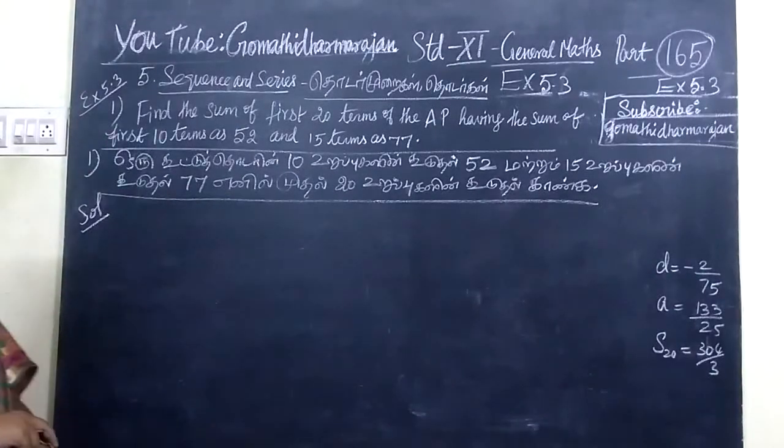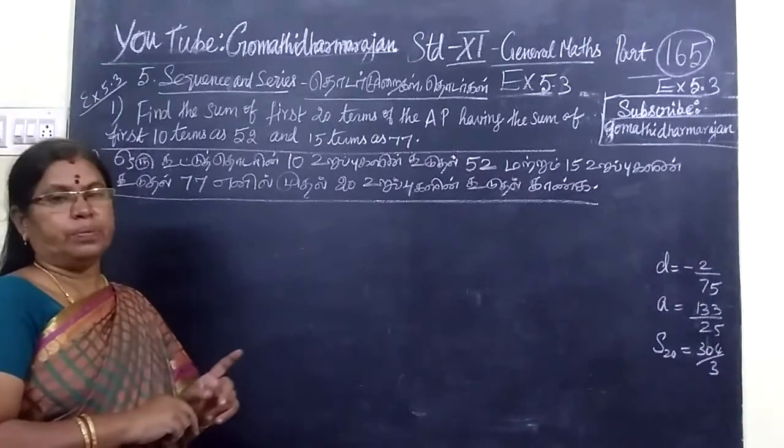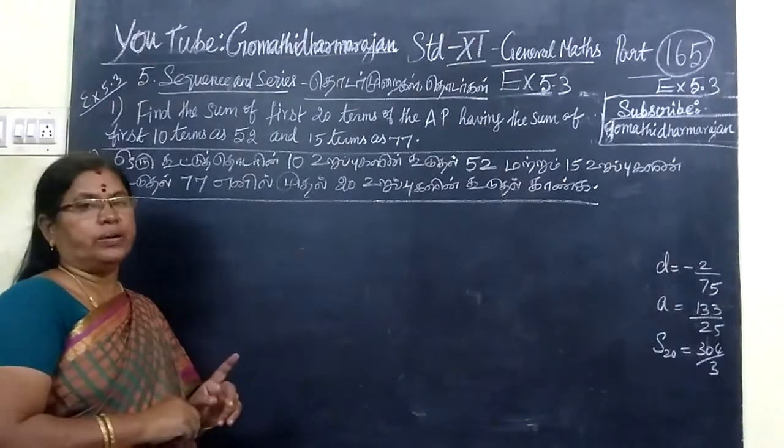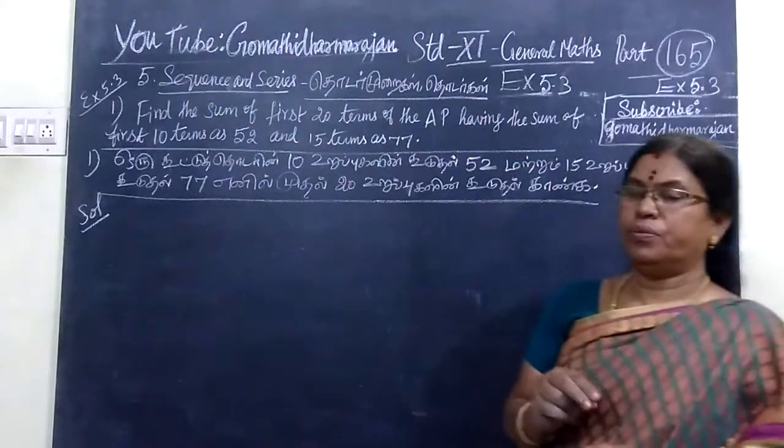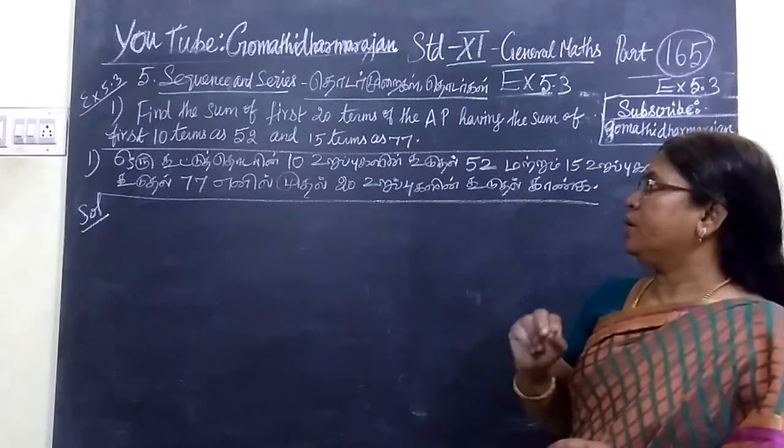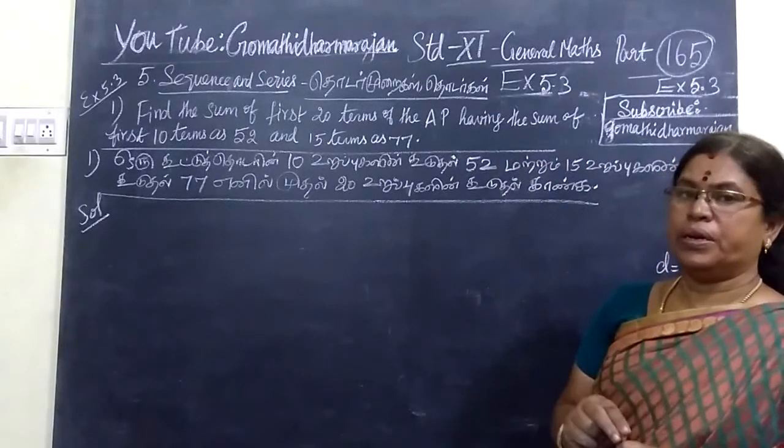Find the sum of the first 20 terms of AP. We are given sum of 10 terms as 52 and the sum of 15 terms as 77.